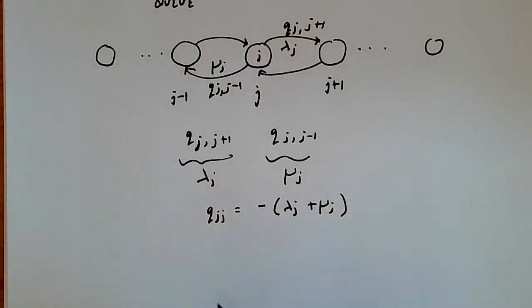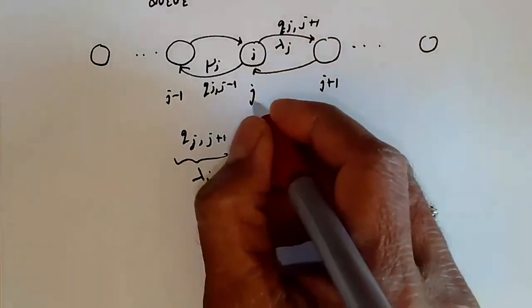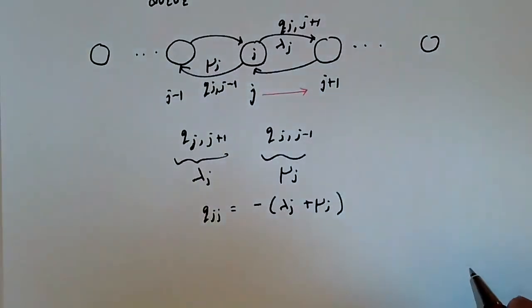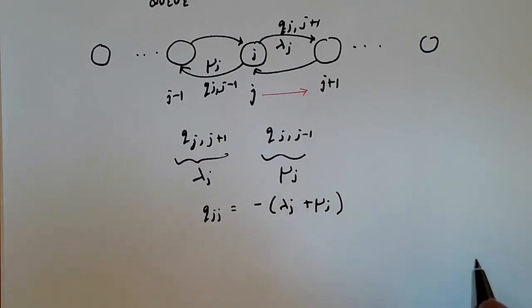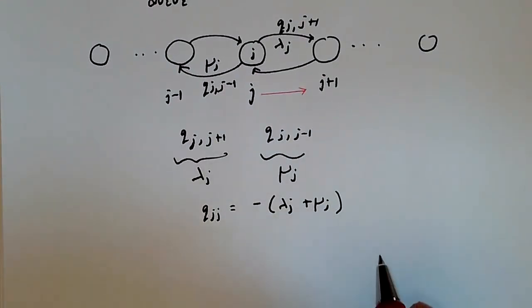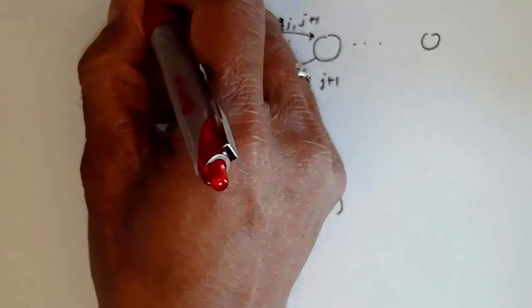This transition rate from state j to state j plus 1 is the arrival rate at which the population grows. It's the arrival rate at which packets enter into the queue, for example.